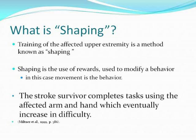Training of the affected upper extremity uses a method known as shaping. Shaping is the use of rewards — specifically enthusiastic approval for mastery rather than punishment or blame for failure — to modify behavior. In this case, movement is the behavior being modified.